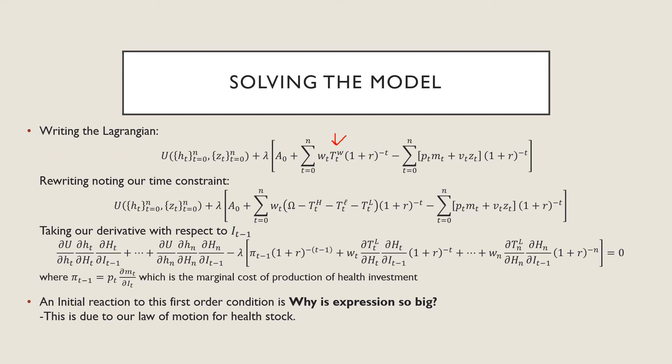Next is that we're going to take our derivative with respect to our investment in health care at time t minus one, and we get this whole big mess over here. And we're going to define this new term pi t minus one, which is going to be equal to p times the partial derivative of our medical expenditure with respect to our investment at time t, which is the marginal cost of production of health investment. An initial reaction, at least for me, is that why is this expression so big? The reason why this is so big is primarily due to our law of motion for health stock, because we're going to be carrying over this i t minus one over in each period as well, so you're just subbing in over and over and over again. So we end up with this massive expression.